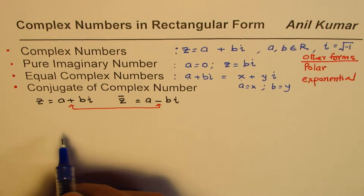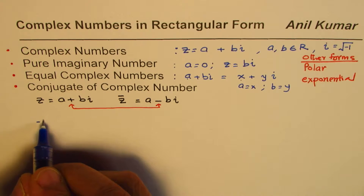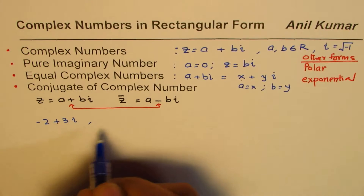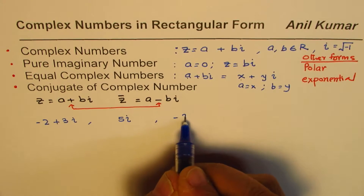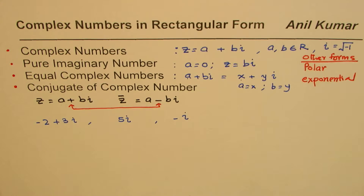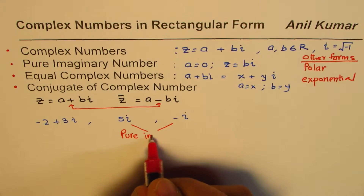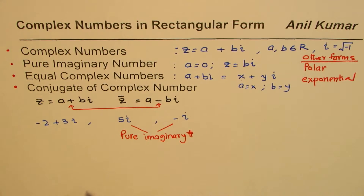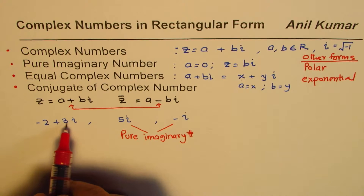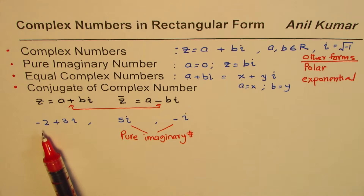Now let's have a few examples to practice. Identify which of the following are pure imaginary numbers: minus 2 plus 3i, 5i, and i. The numbers 5i and i are pure imaginary numbers, while minus 2 plus 3i is a general complex number — it has both a real part and a pure imaginary part.